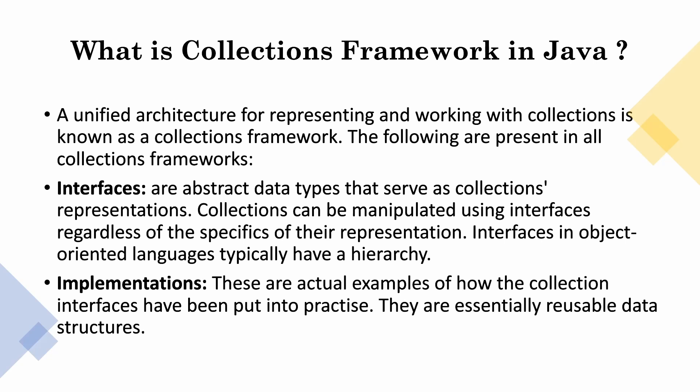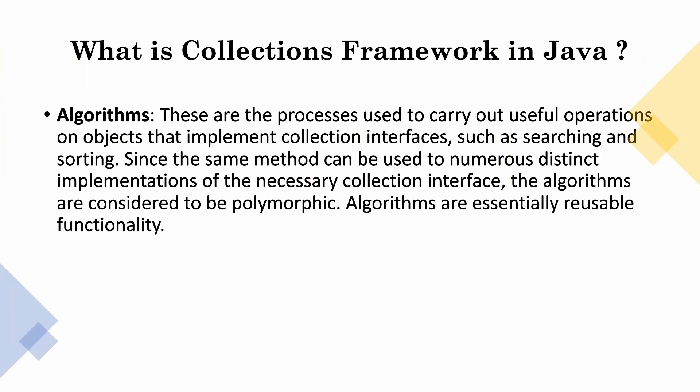Implementations are how these interfaces have been put into practice — how you can reuse your data structures. The next part is algorithms. Algorithms are the processes that you carry out, such as sorting and searching. Instead of writing the same code again and again, these collections let you simply apply a method like 'sort' to easily get results rather than coding many lines. Since the same method can be applied to numerous distinct implementations of the necessary collection interface, the algorithms are considered to be polymorphic — it is reusable functionality.